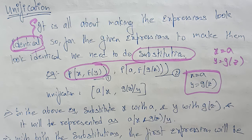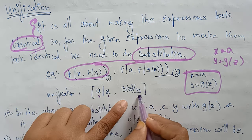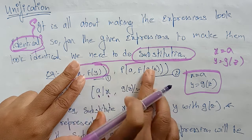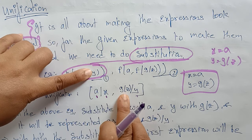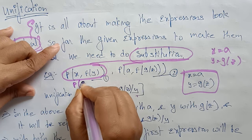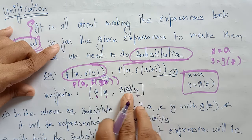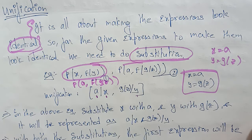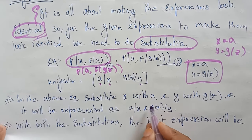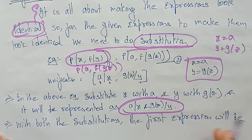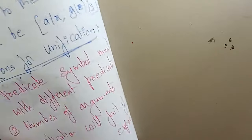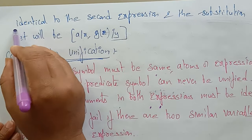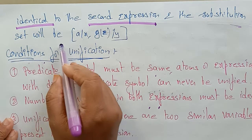This is the representation of unification. By seeing the expressions, I have to identify whether there is a unification or not — meaning can you make those expressions look identical? How can I make those statements look identical? By simply substituting: X is substituted with A and Y is substituted with G(Z). Then these two statements look identical. So in the above example, substituting X with A and Y with G(Z), the first expression will be identical to the second expression. The substitution set will be represented as this statement.